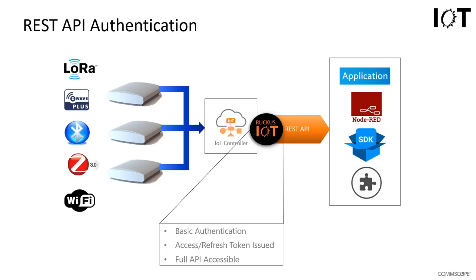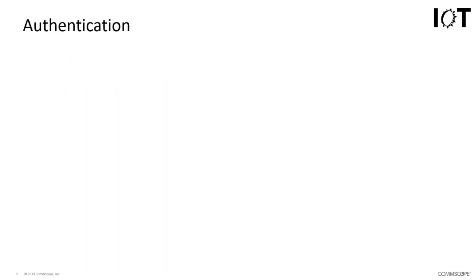For that we need to perform basic authentication or user role-based authentication, which will provide us with an access token and a refresh token. Those tokens are then used to provide full API access into the IoT controller. The key things to understand are the authentication steps, starting with basic authorization.